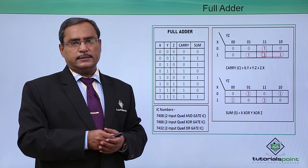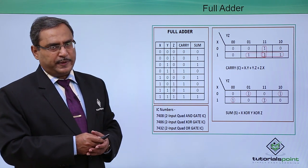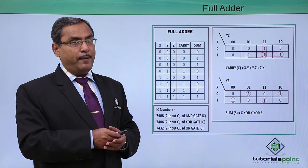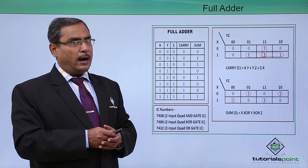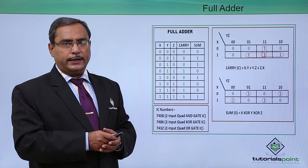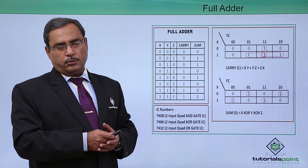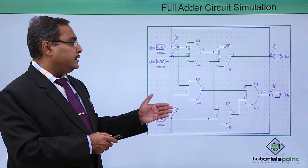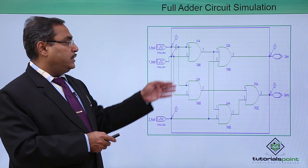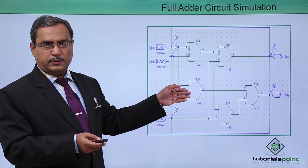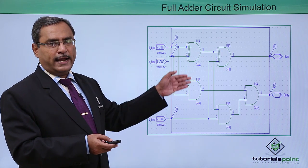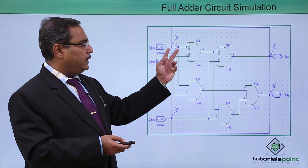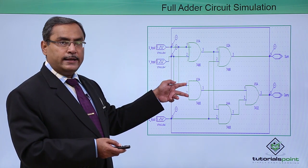Let us check how we have implemented this in PSPICE software. We know that using half adders also we can implement a full adder — 2 half adders and 1 external OR gate can also implement a full adder circuit. We know that in the case of a half adder, we require 1 XOR gate and 1 AND gate. The 2 inputs going to the XOR gate will also be going to the AND gate.